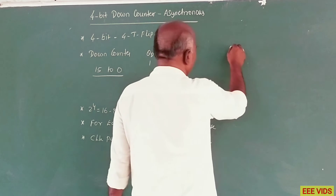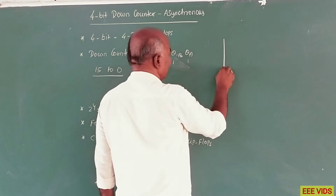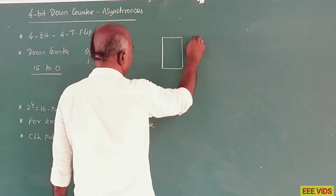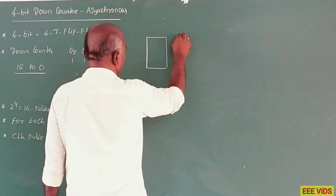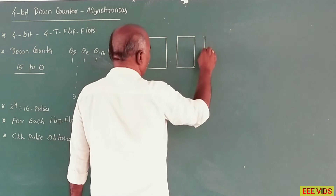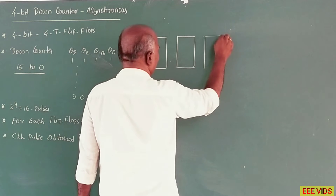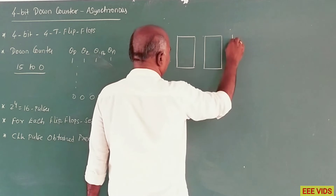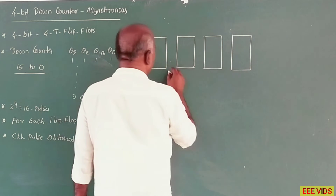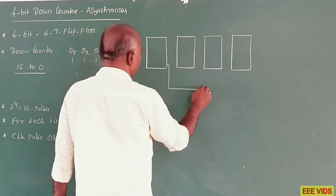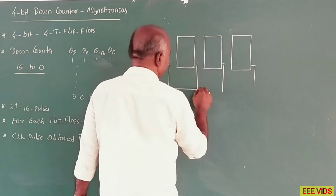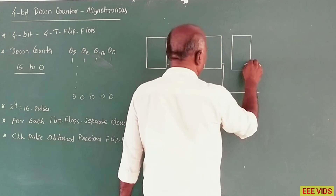So we have 4 T-type flip flops. Each flip flop has a T input — so 2 T inputs are used in this configuration.